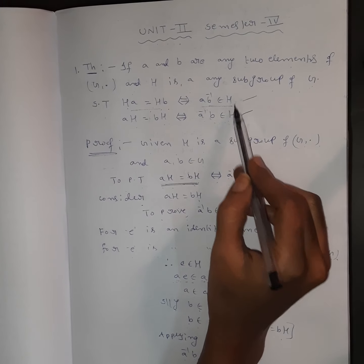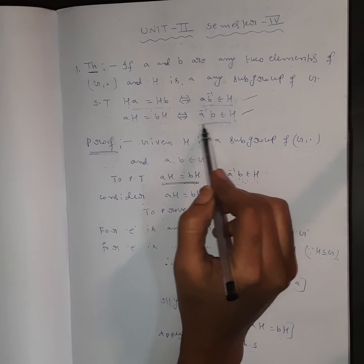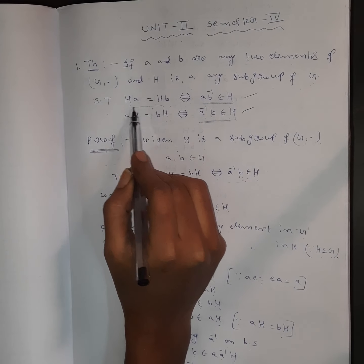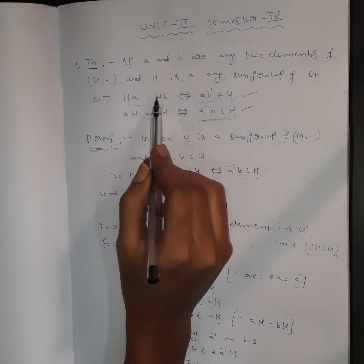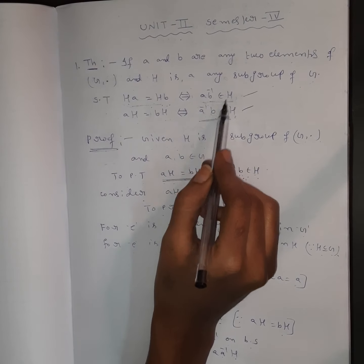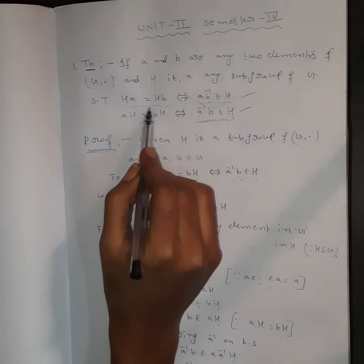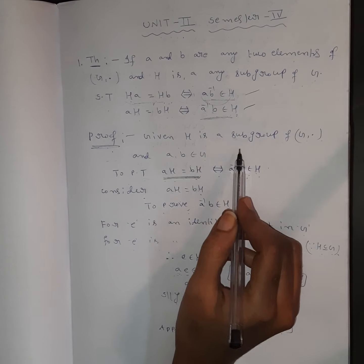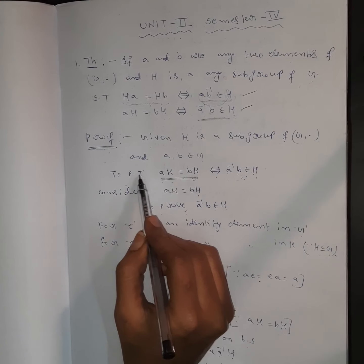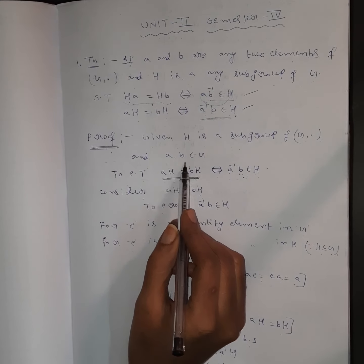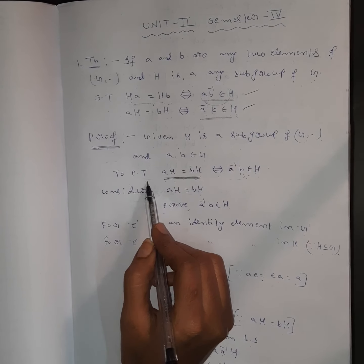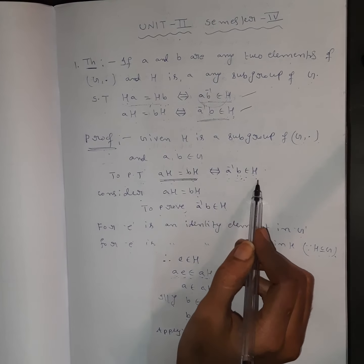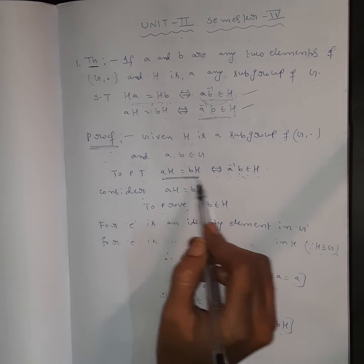This is an important exam question. Given: H is a subgroup of G, and A and B belong to G. To prove: AH equals BH if and only if A⁻¹B belongs to H.